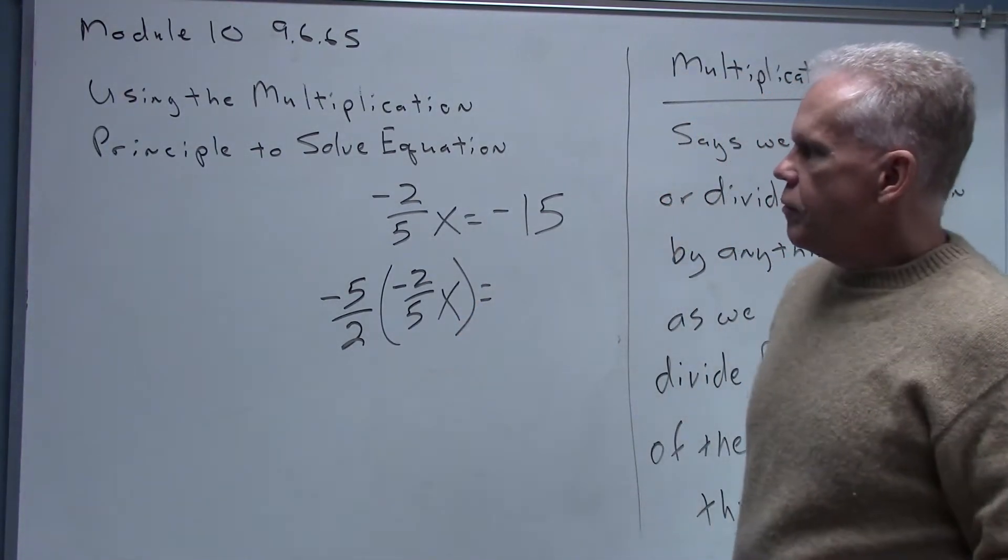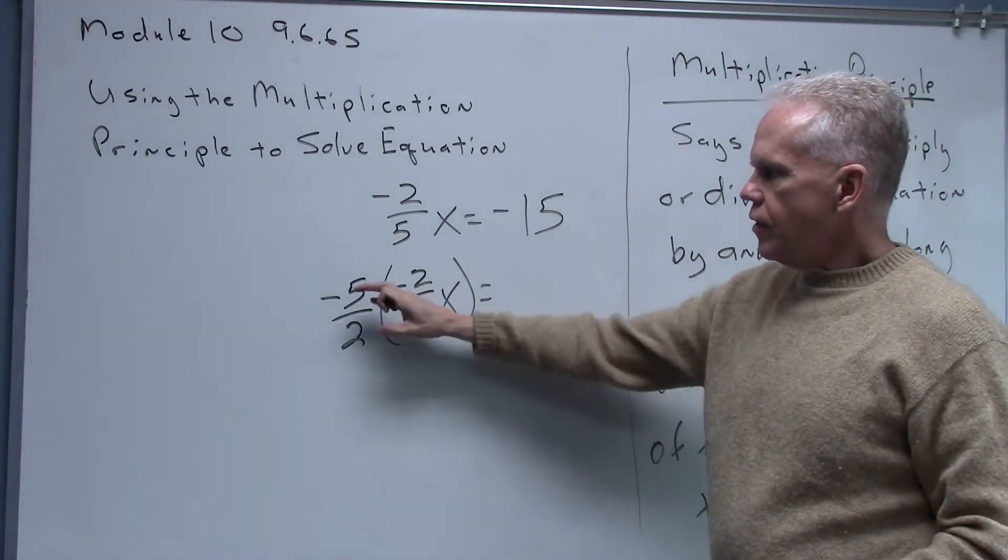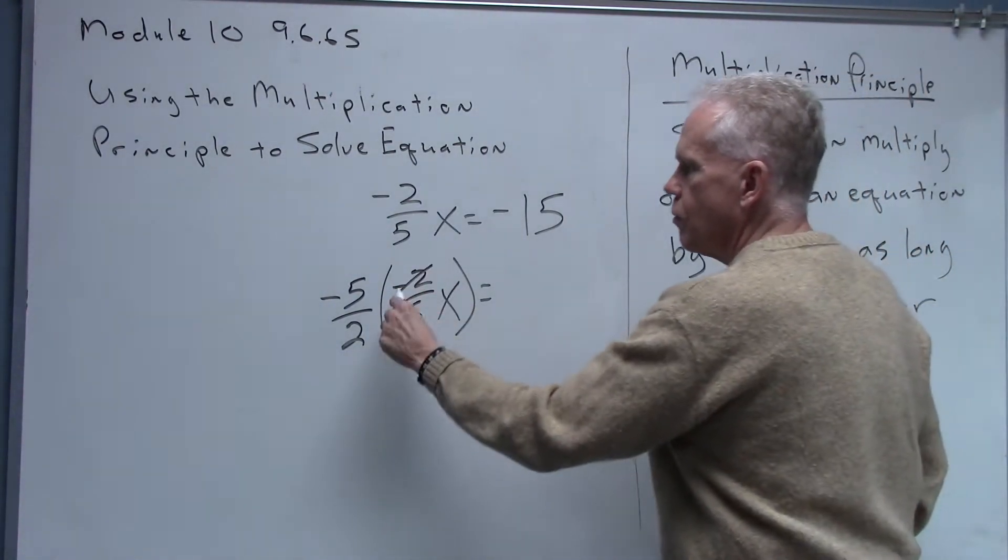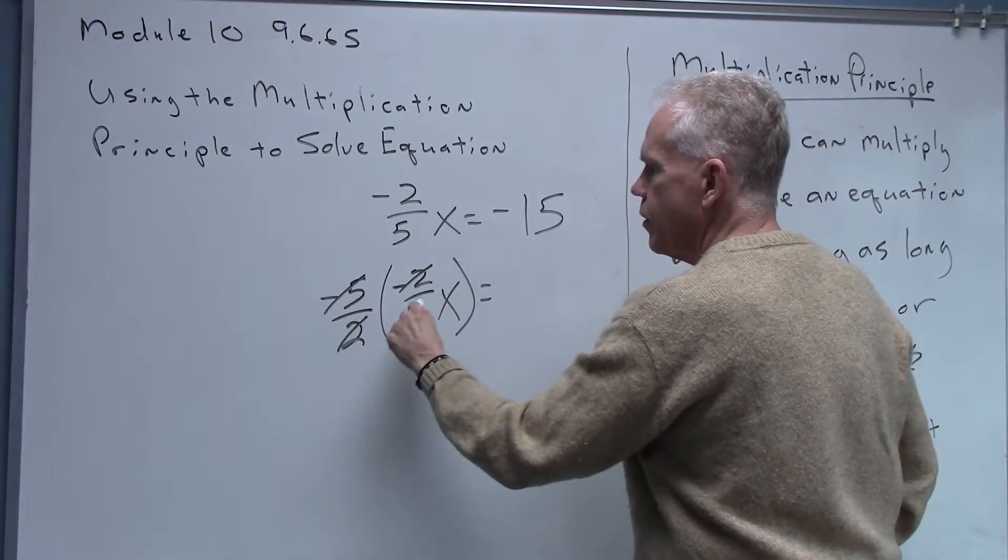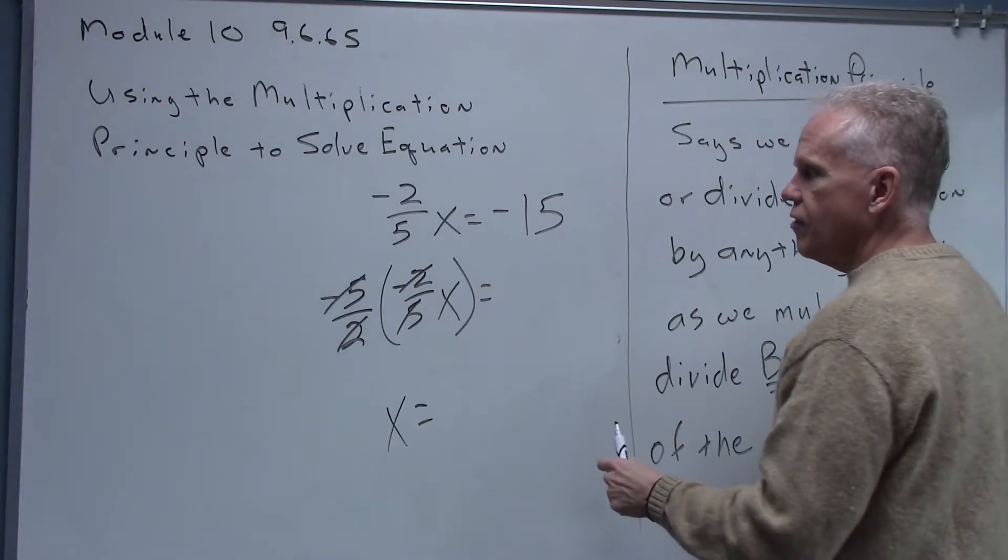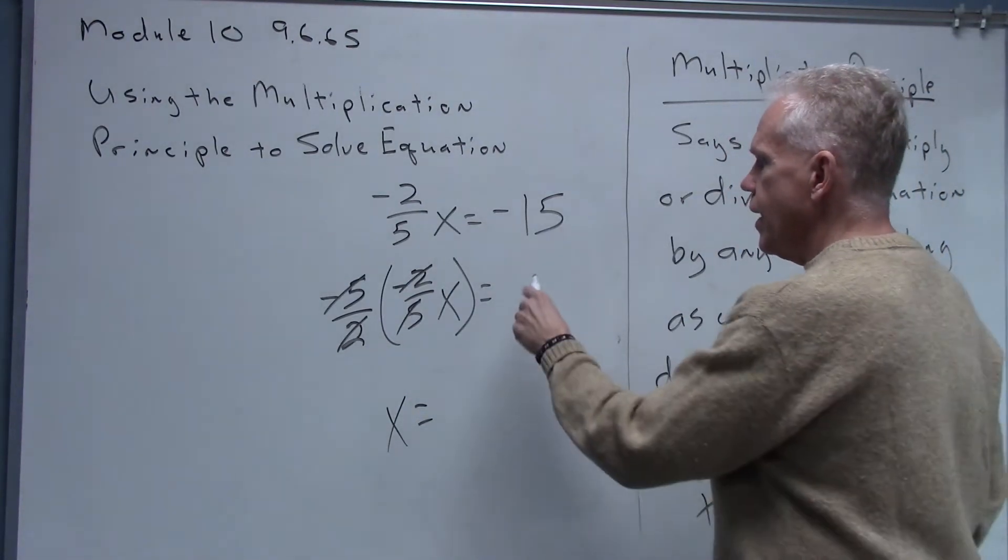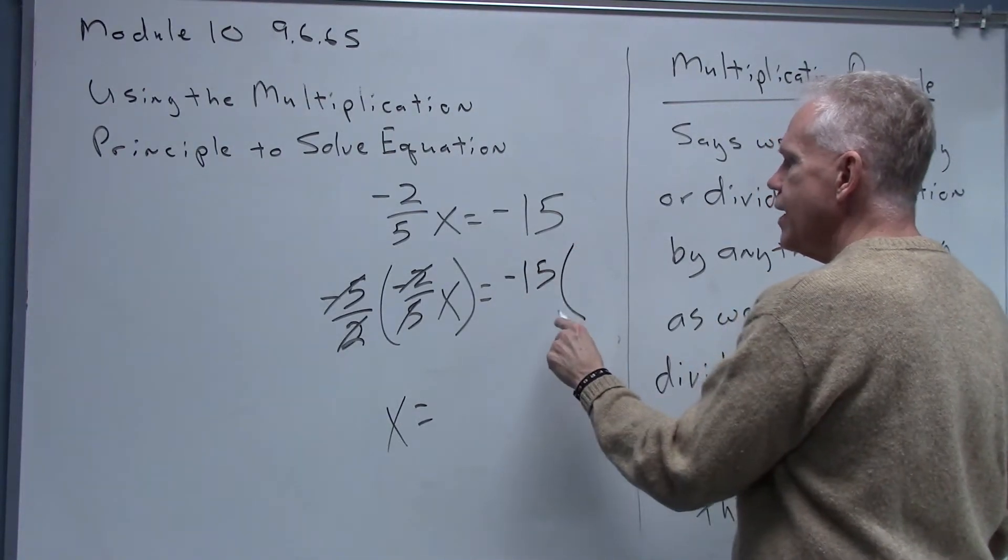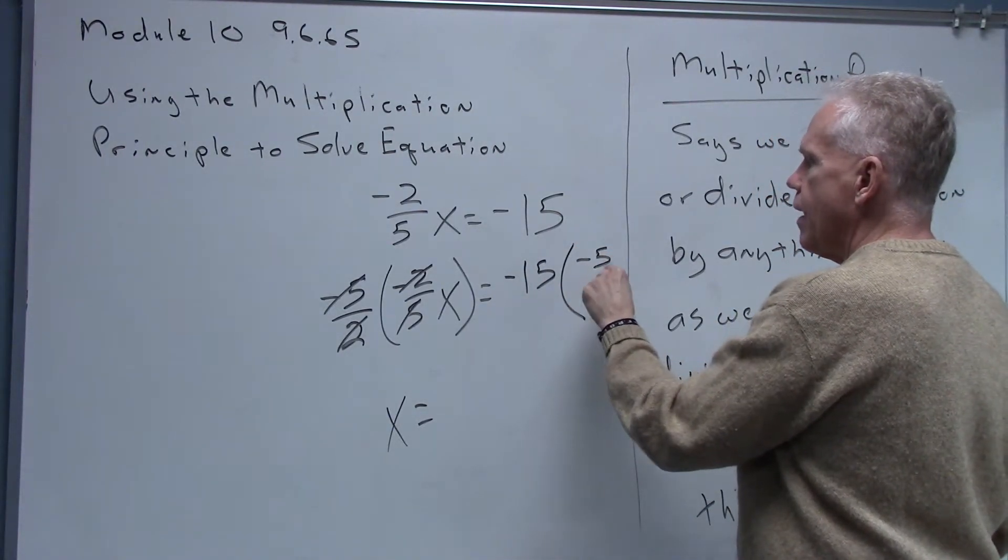All right, so you see when I flipped it over, essentially it said that I would cancel out numerator with denominator, numerator with denominator, leaving x by itself. So if I'm going to multiply that left side by negative five over two, I got to come over here with this negative fifteen and also multiply it by negative five over two.